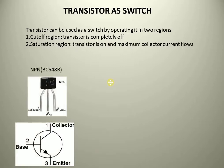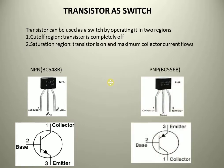There are two types of transistors: one is NPN transistor and the other is PNP transistor. In this session, for demonstration, I will be taking NPN transistor BC548B. The complementary version of BC548B is BC558B. As you can see, the transistor has three terminals: collector, emitter, and base.